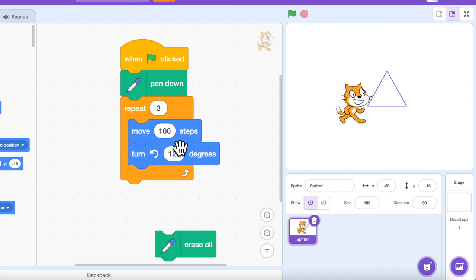We can increase the size or decrease the size of the triangle by modifying the move steps. Let's say if I want a bigger triangle, I can modify it to 150. Now we have a bigger triangle. If I want a smaller triangle, I can simply change the move steps to 50 and run the program again. And now this is the way to draw an equilateral triangle.